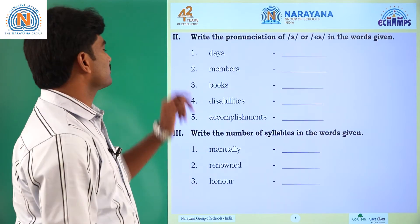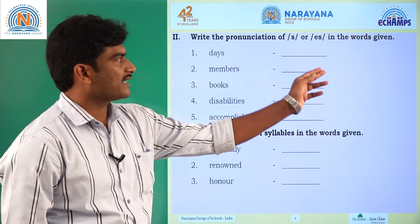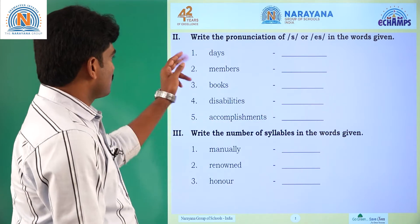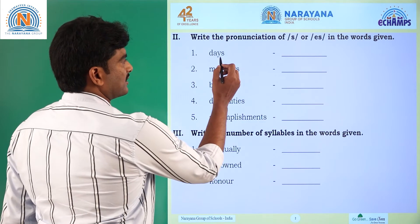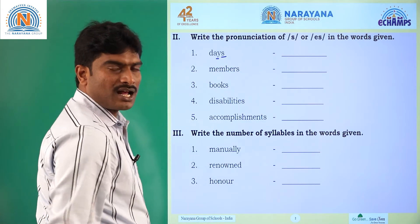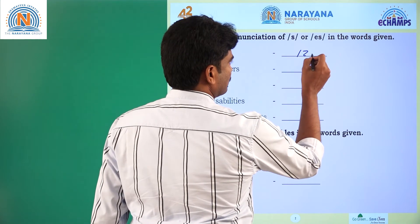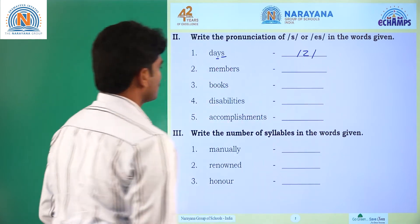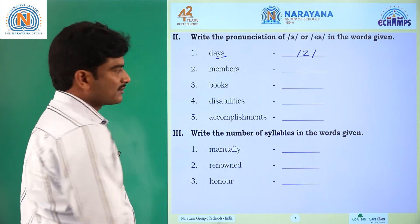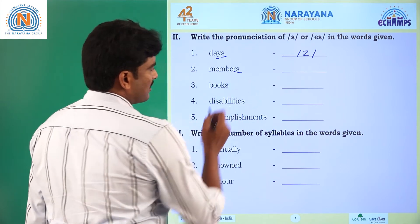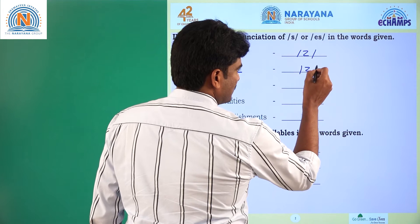Coming to Roman number 2: write the pronunciation of S or ES in the verbs given. Question number 1: days. Here S is added to the Y letter and the sound is Z sound. Question number 2: members. Here S is added to the R, that is Z sound.